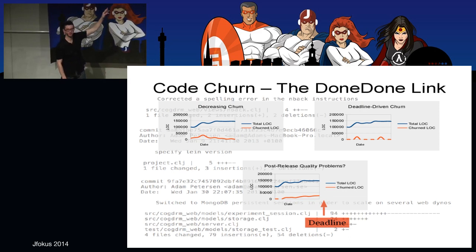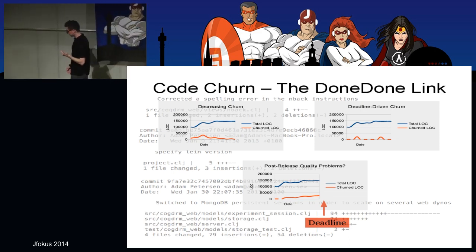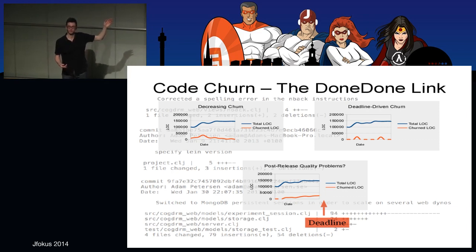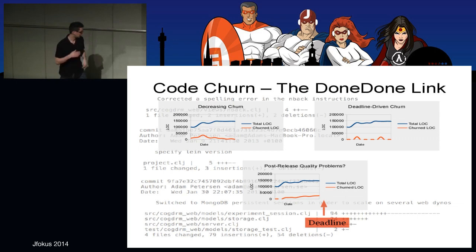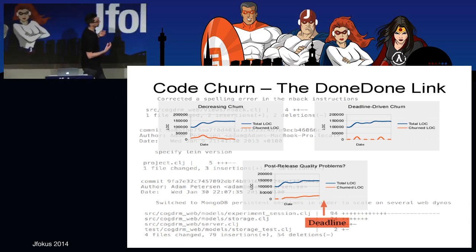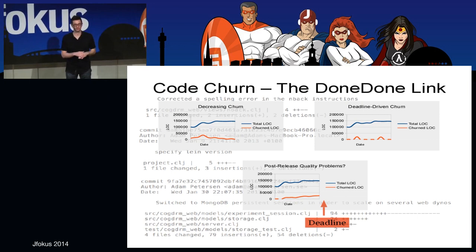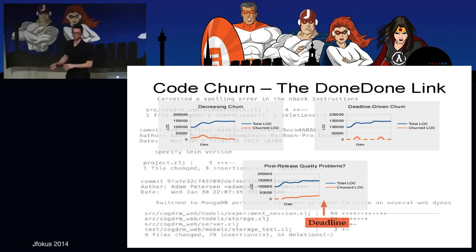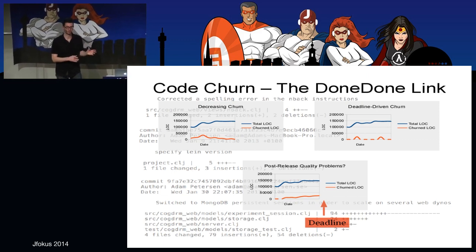Even if we somehow manage to control the quality on each individual branch, we don't know what happens when those features get integrated. We run the risk of unexpected feature interaction — some of the nastiest bugs you can have. So if you see that pattern, that's a problem, and you have to work actively with the method and process the team is using to address it. This is not a technical issue.